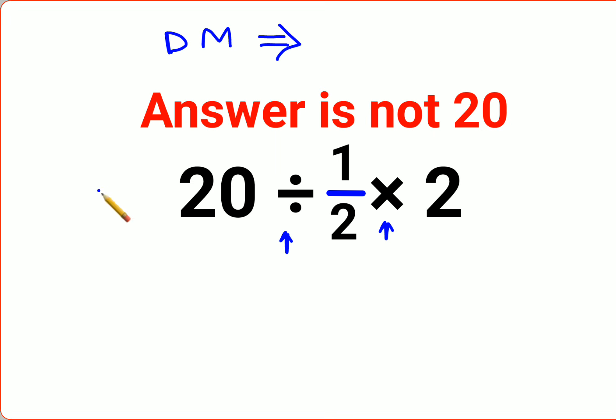When you have a sum like this which has just division and multiplication, you will always follow the rule of left to right, meaning first you will do the operation which comes first from your left hand side. So here the first operation to be done is 20 divided by half.